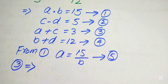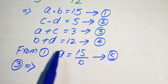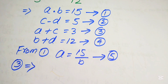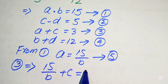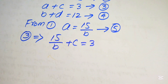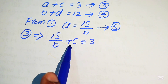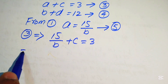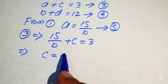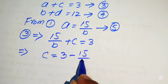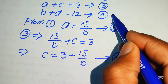Equation 3 is A plus C equals 3. Substituting A equals 15 over B gives us 15 over B plus C equals 3. Moving 15 over B to the right-hand side, we get C equals 3 minus 15 over B. We call this equation 6.